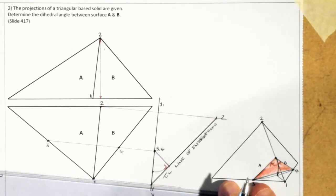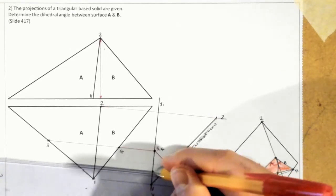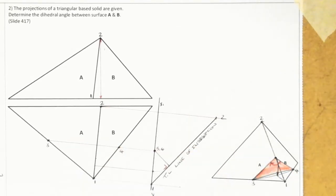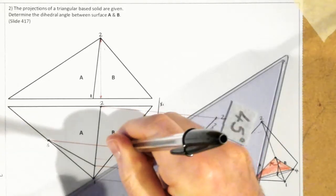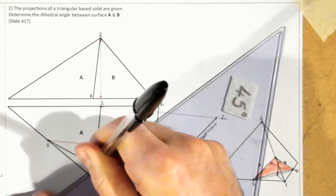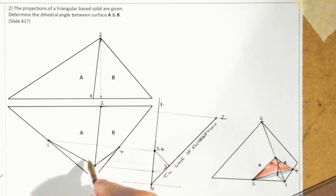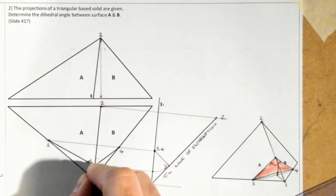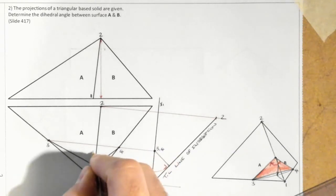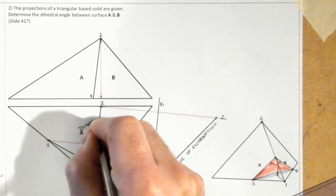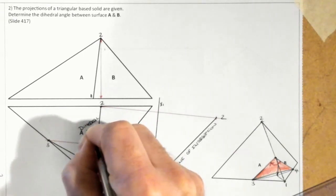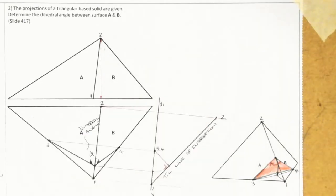There we go. You can see the difference between the points — that is when it was up at height, whereas this is at the position when it is on the ground. At this point here, I have now found the dihedral angle between the surfaces A and B, and that was done — that angle inside there, sometimes signified by that marking. And that there is the dihedral angle. That is the rebatment method.